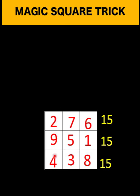Then let's add the column. 2 plus 9 is 11 plus 4 is 15, 7 plus 5 plus 3 is also 15, 6 plus 1 plus 8 is also 15. And for the diagonal, 4 plus 5 is 9 plus 6 is also 15.